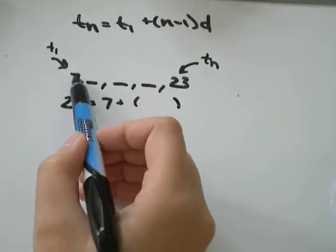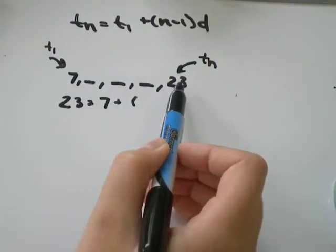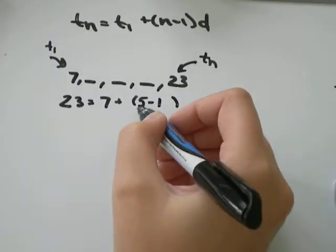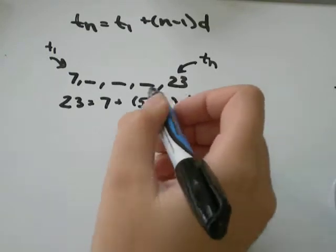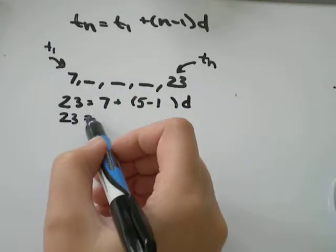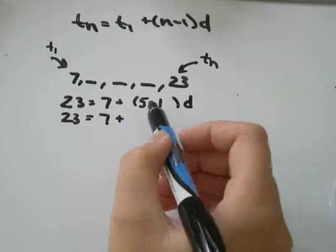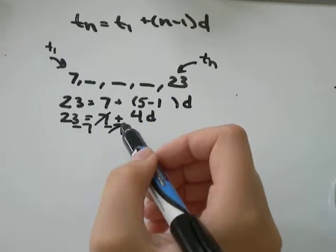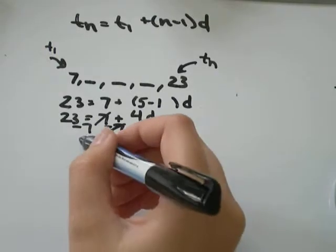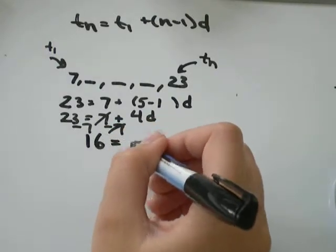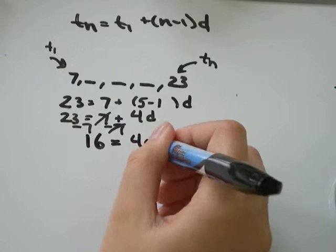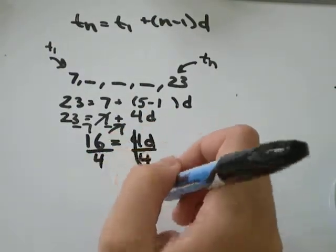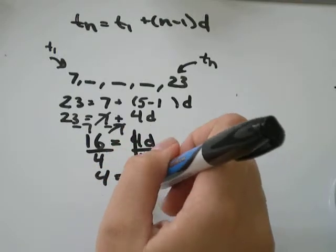So T_n would be 23 equals T_1 is 7 plus n minus 1. Well, I know that I have 1, 2, 3, 4, 5 terms in total. So n would be equal to 5 minus 1 times d. So 23 is equal to 7 plus 5 minus 1 would just be 4d. I'll subtract 7 from both sides to make that go away. 23 minus 7 would be equal to 16. So 16 equals 4d. Divide both sides by 4. And I'll get 4 equals d.